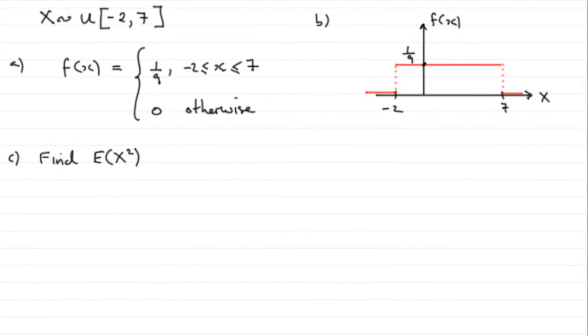Now for this part of the question, part c, we've got to find E of X squared. And to do something like this, you've got to remember this equation. The variance of a random variable X is equal to E of X squared minus the mean E of X all squared.